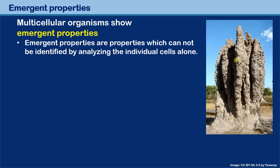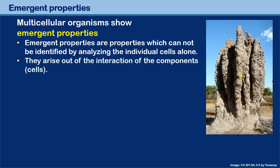In order to avoid all of that, these termite colonies are constructed with a built-in air conditioning or ventilation system. There are channels inside which allow for natural air circulation, so that the termites do not die because of lack of oxygen.